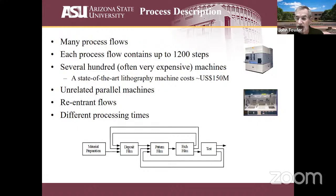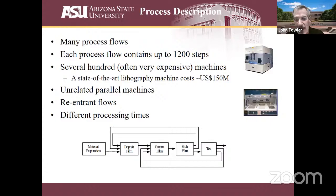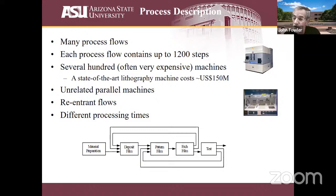A typical fab has many process flows — TSMC has thousands of process flows running at once. Each process flow can contain 1,200 or more steps going through several hundred machines. Those machines are very expensive — a state-of-the-art lithography machine costs about 150 million US dollars. You can't just buy an extra one to solve your scheduling problem, so you have to efficiently use those resources. Lithography tends to be the bottleneck because of the high cost.